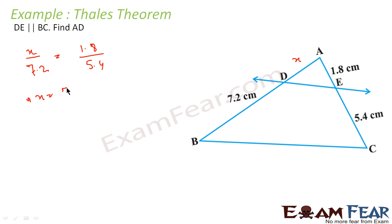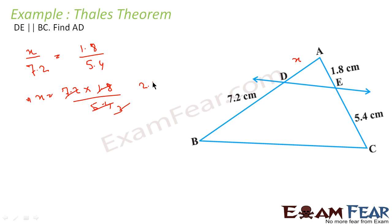So x is equal to 7.2 multiplied by 1.8 divided by 5.4. Cancelling, this becomes 2.4. So x is equal to 2.4 centimeters and that is the answer.